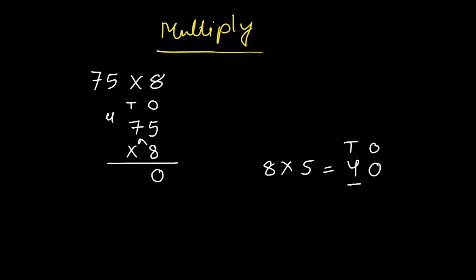7 tens is multiplied by 8. 8 times 7 is 56. 56 and 4 tens is added. We write 60 here. The answer is 600.